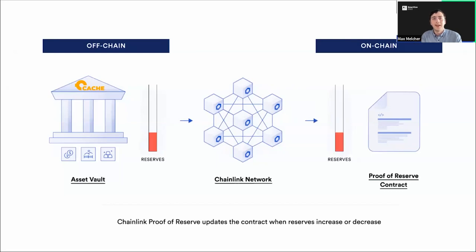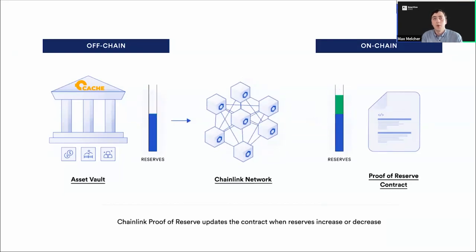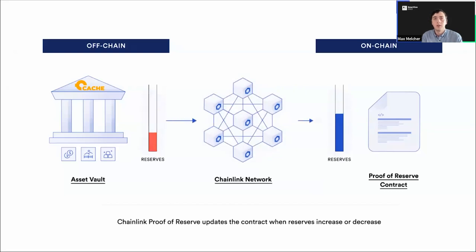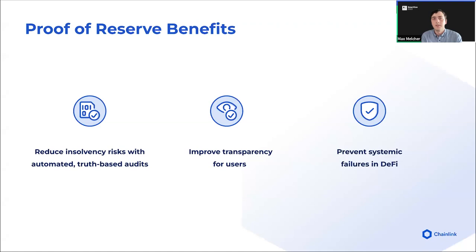This is a great diagram to illustrate what Proof of Reserve does. This is an off-chain to on-chain use case. We can see that the Chainlink network monitors the reserve balance of a given asset vault — this could be US dollars, gold, or really anything. Whenever that reserve balance changes, the Chainlink node network comes to consensus on what the new value is and updates the on-chain contract. The last three months really give us great insight into why this is important. By putting reserve data on-chain at all times, we can reduce insolvency risk, improve transparency for users, and prevent systemic failures in DeFi.